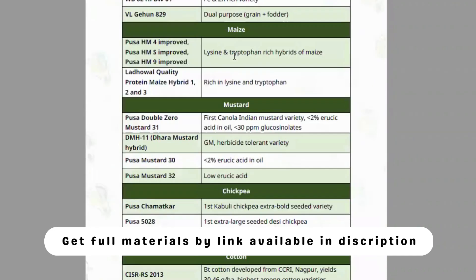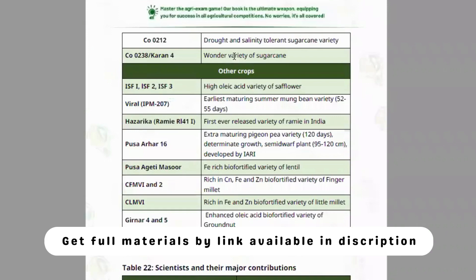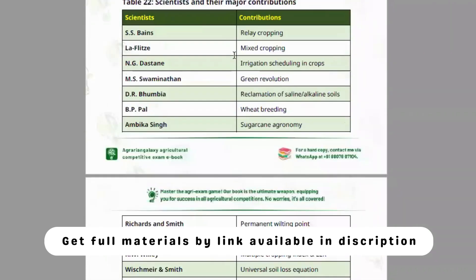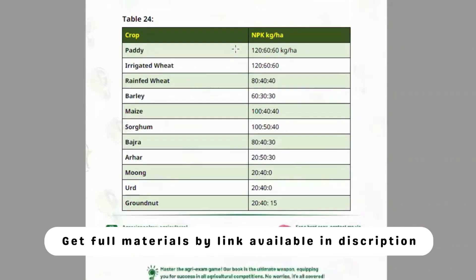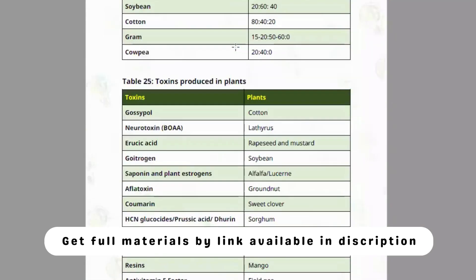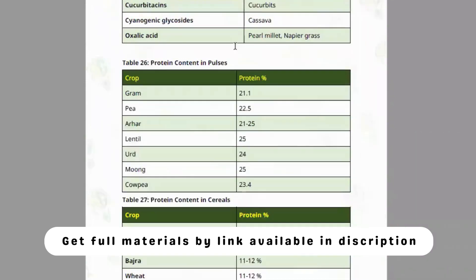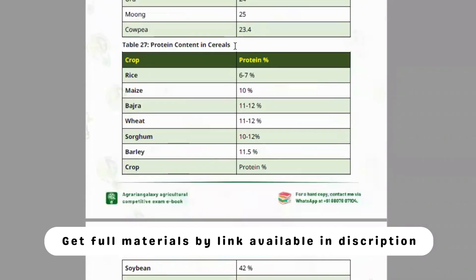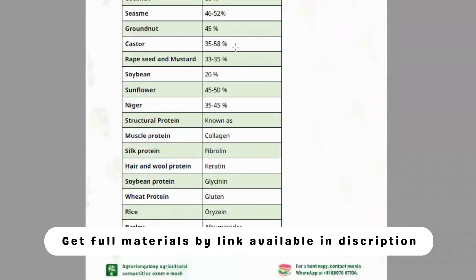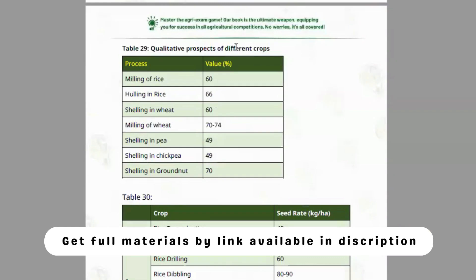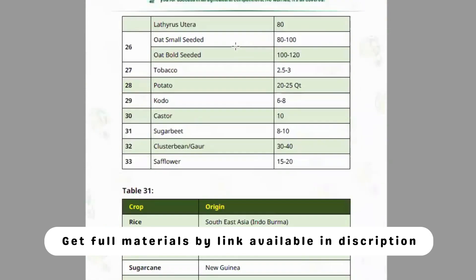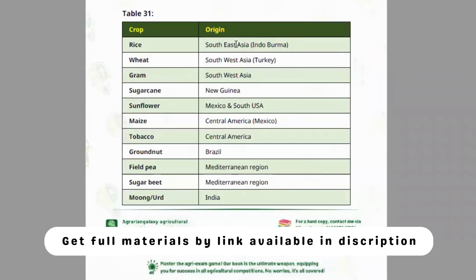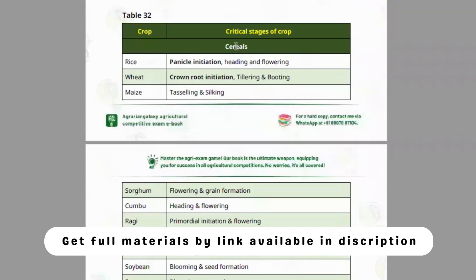Recently released varieties of important crops are listed along with scientists and their major contributions. Additional tables include crop spacing, crop nutrition ratios, toxic compounds present in crops, protein content in pulses and cereals, oil content in crops, qualitative prospects of different crops, seed rates for different crops, and critical stages of crops.